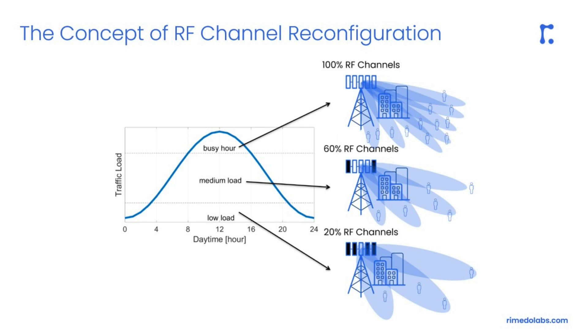Moreover, to serve medium load only 60% of RF channels are sufficient, and during low load hours only 20% of RF channels is enough. One should know that reduction of RF channels is related to different beam shapes and count.